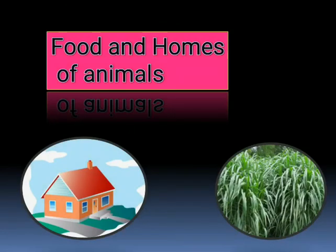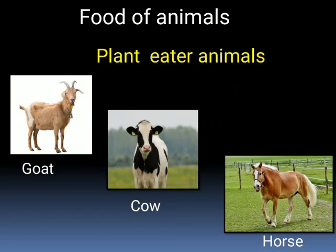Now we will learn about food and homes of animals. Animals need food to eat and shelter to live. Animals eat different kinds of food and live in different types of shelters. Some animals eat only leaves, grass and other plant parts. They are called plant eaters. Goat, cow and horse are some plant eaters.